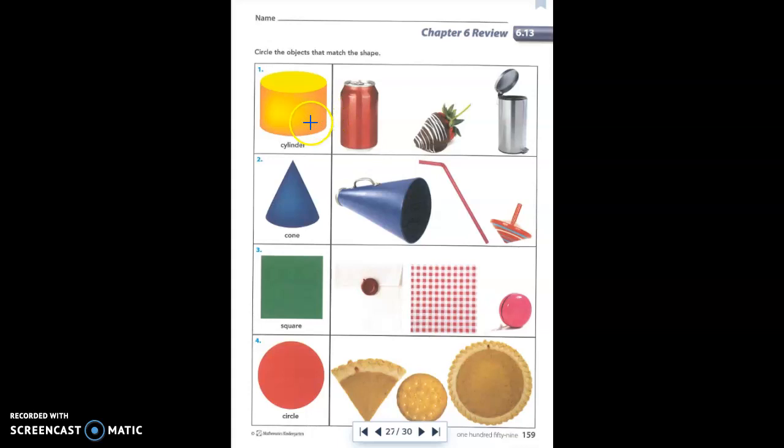Remember the difference between a 3D shape and a 2D shape is that the 3D shapes have height, depth, and width. There's dimension to these shapes. The flat shapes or the 2D shapes are something that you can literally step on. So let's begin. Number one, cylinder. Which shapes are cylinders?